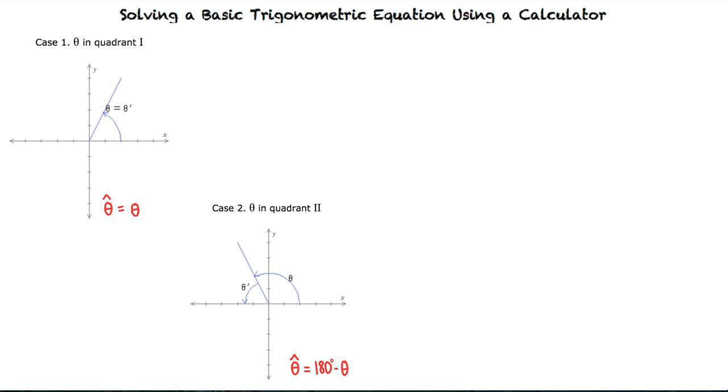Similarly, if we have an angle in quadrant 3, then the reference angle equals theta minus 180 degrees. And if we have an angle in quadrant 4, then the reference angle equals 360 degrees minus theta.